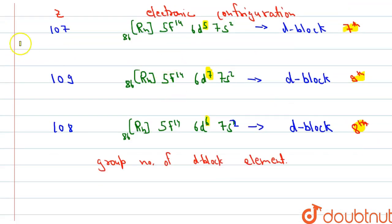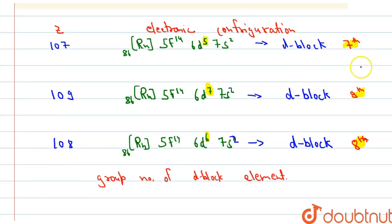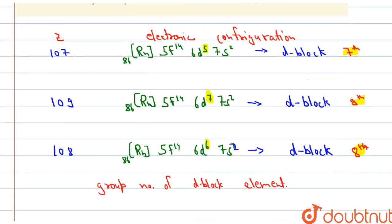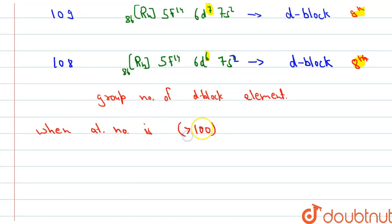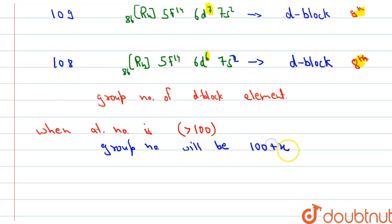This is the first method to find the answer to these types of questions. There is another method: whenever we get an atomic number greater than 100, the group number will be atomic number minus 100.